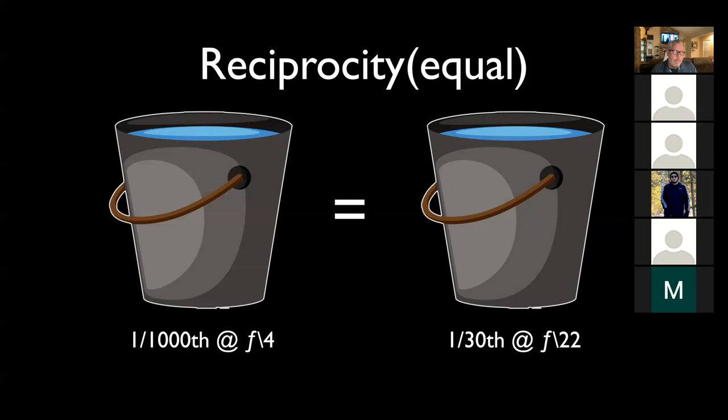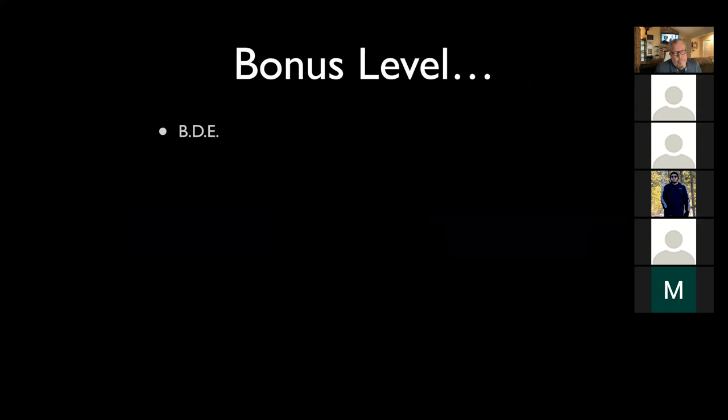Now we're going to go to bonus level - just a little bonus level thing. I promise I will never quiz you on the bonus level stuff; it's just information. So bonus level is this term called BDE, or Basic Daylight Exposure. Some people also refer to it as what's called the Sunny 16 Rule.